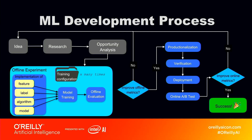For example, an engineer might have an idea of using a deep learning model to extract useful information from a job post to improve the accuracy of job recommendation.